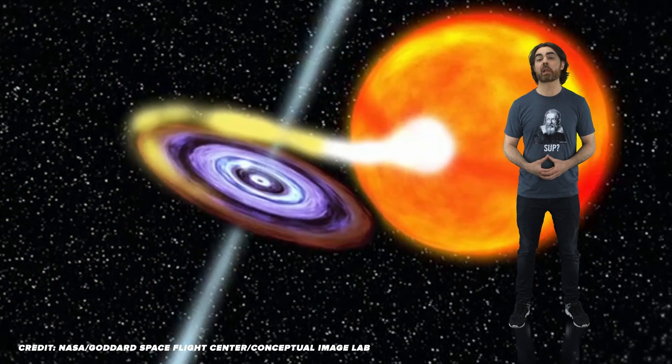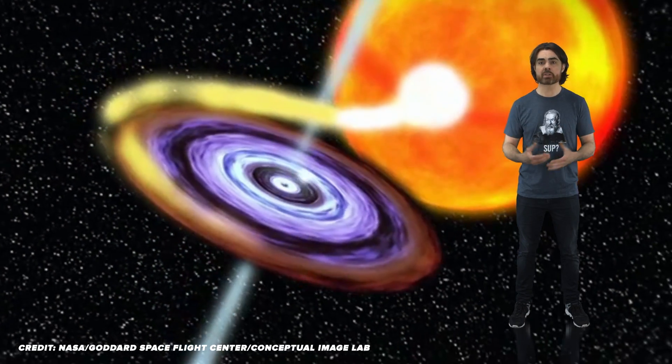So how did Haley and team spot these black holes? I mean, they're supposed to be black, no? Well, that's true. Black holes are effectively invisible. But things can be different if a black hole and a companion star are in a binary orbit around each other.